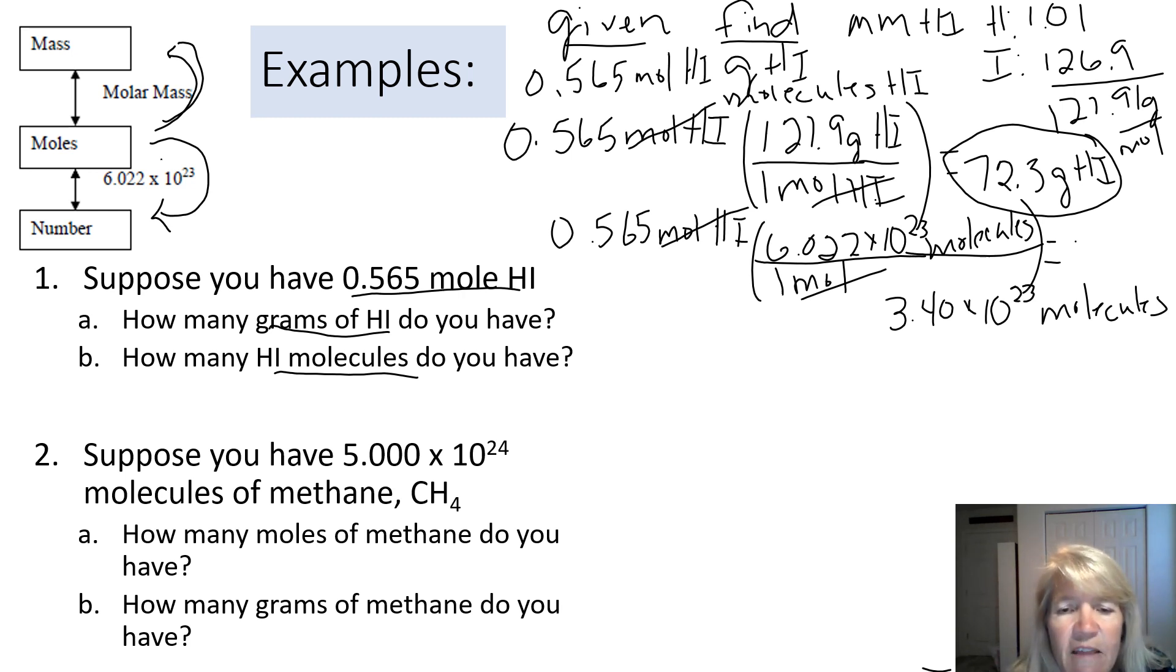Looking at the second problem. Again, think about our given and find. So our given now is molecules. 5.000 times 10 to the 24th molecules. In part A, the find is moles. So this time we're starting at number and going to moles.